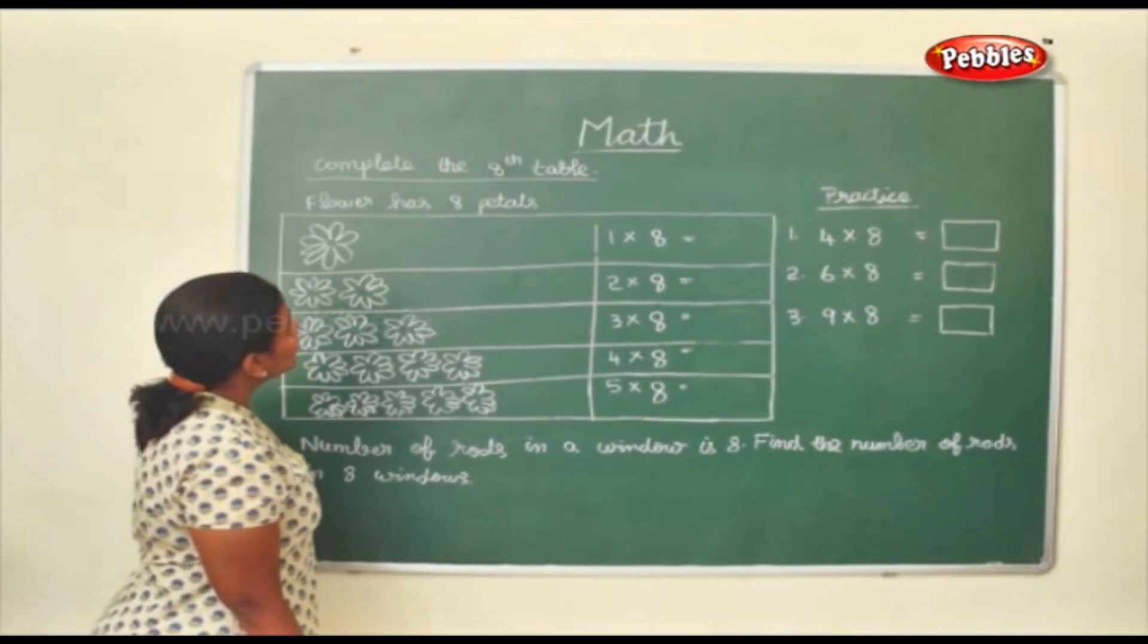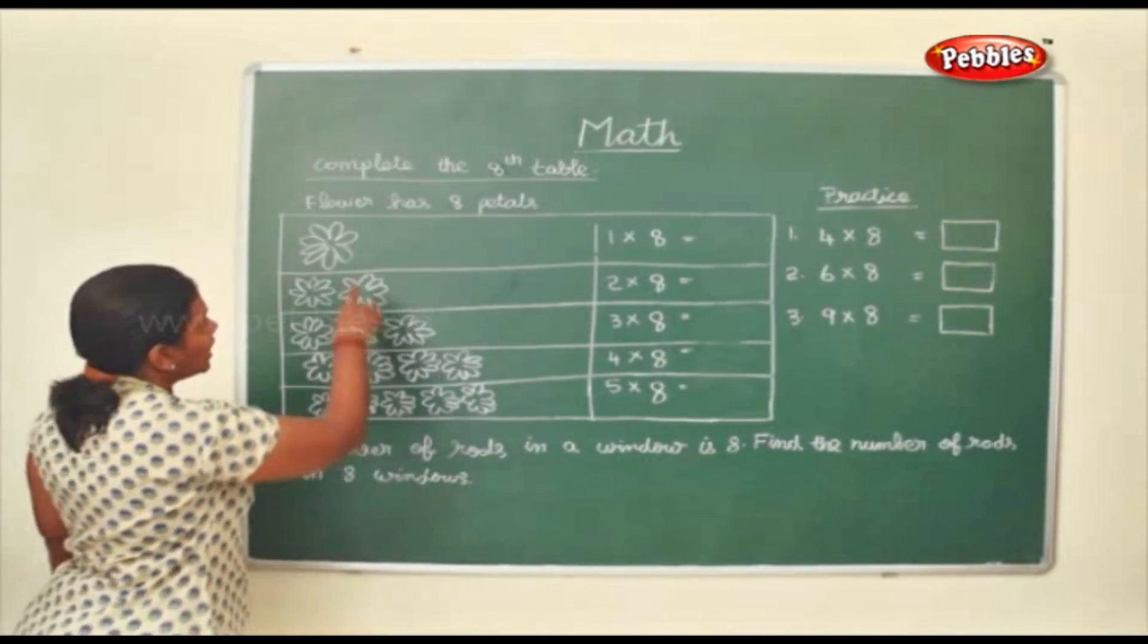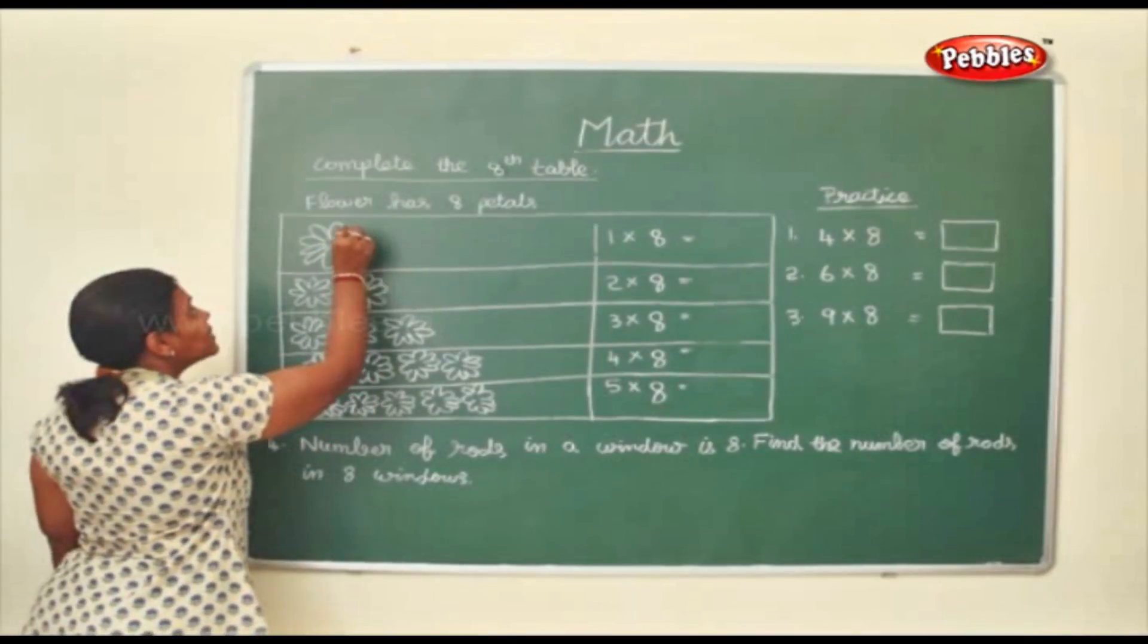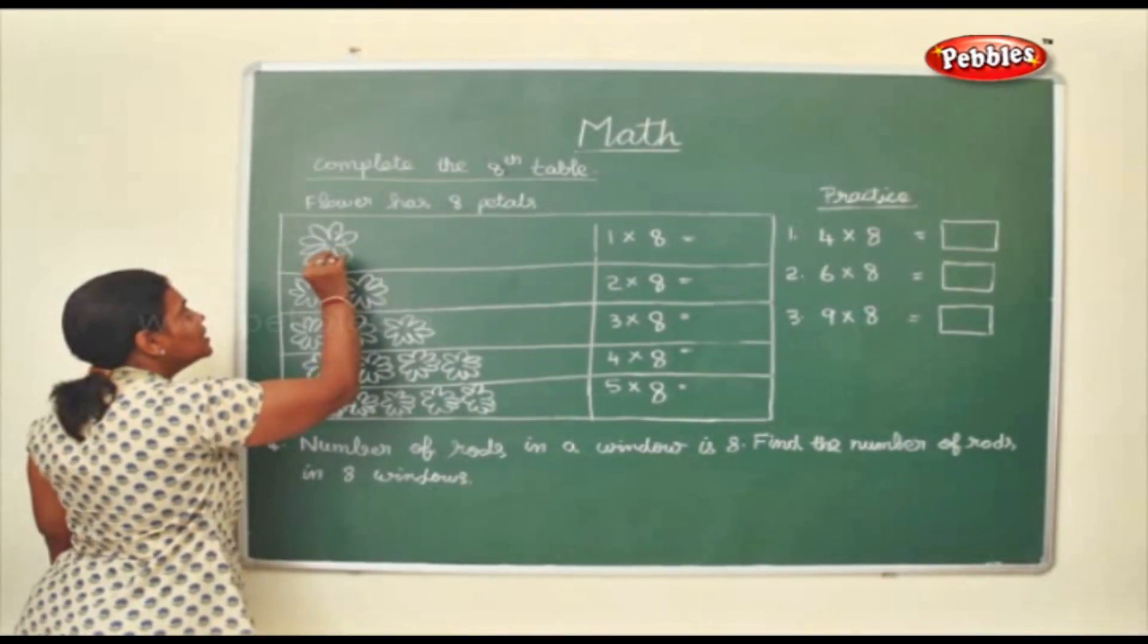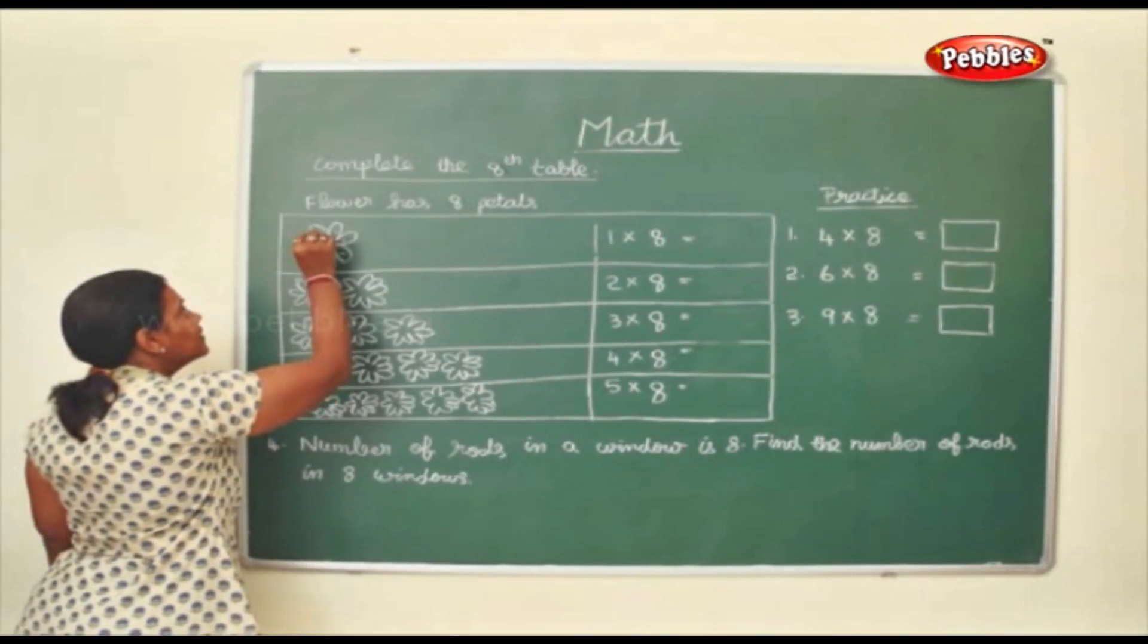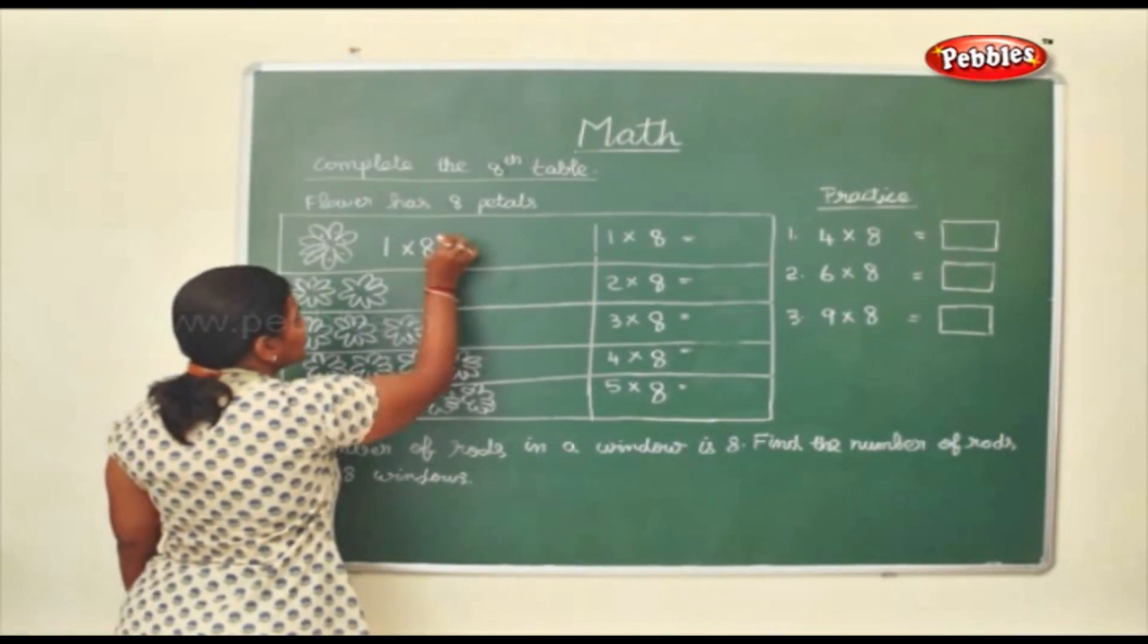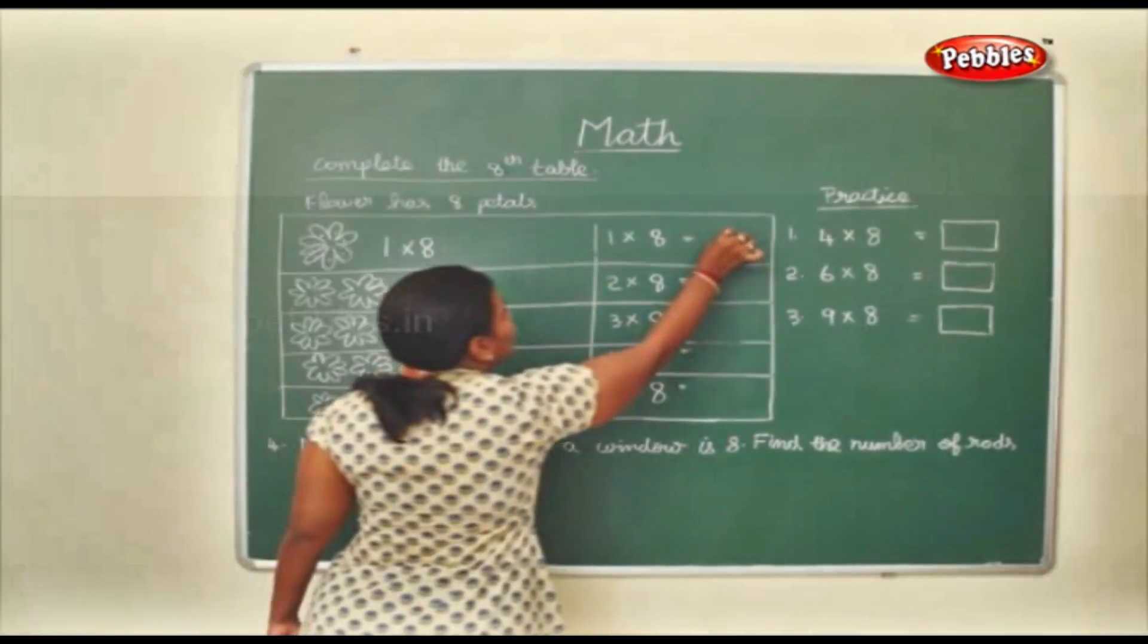Now we shall complete the 8th table. Now this flower has 8 petals. Earlier we saw 7 petals. Now this has 8 petals. 1, 2, 3, 4, 5, 6, 7 and 8. So 1 flower into 8 petals will be 8.